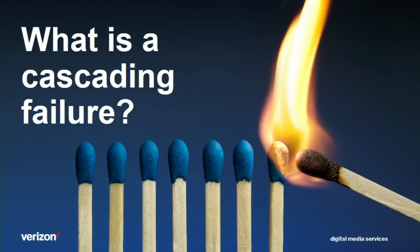What is a cascading failure? One way to think about it is a cascading failure is when the failure of one component in your system can cause a ripple-on effect and take down the entire system — like dominoes falling or these really oddly arranged matches catching fire.